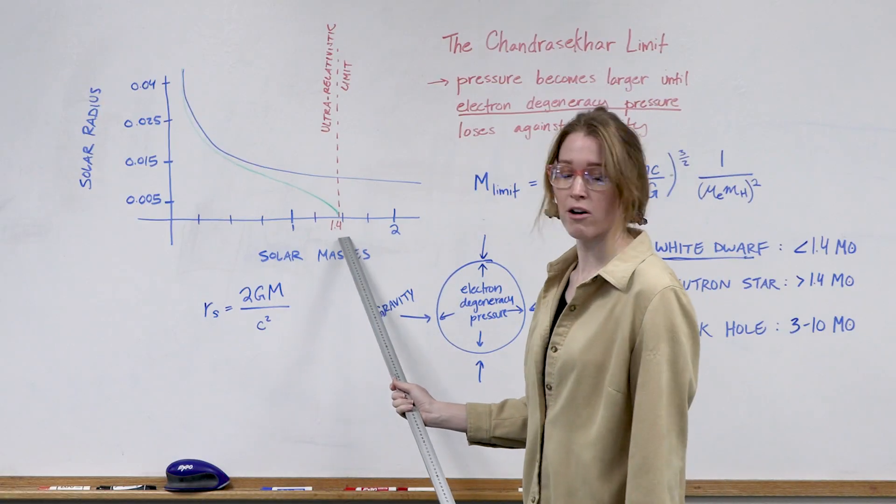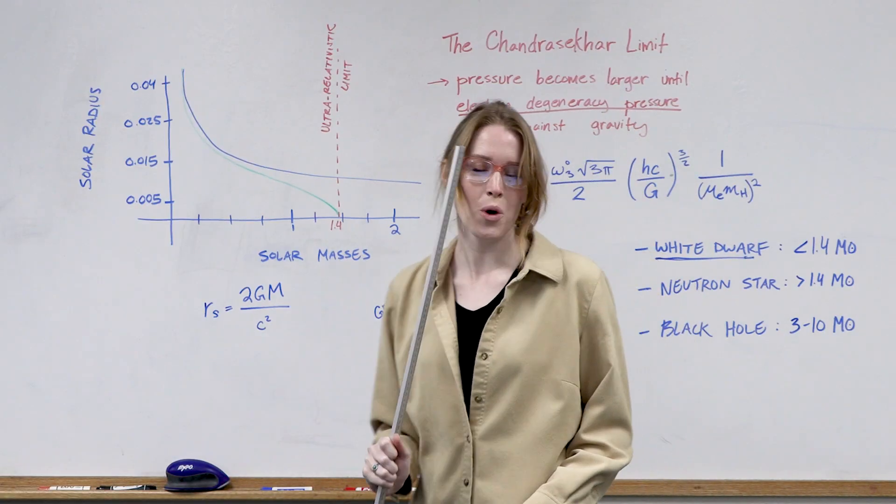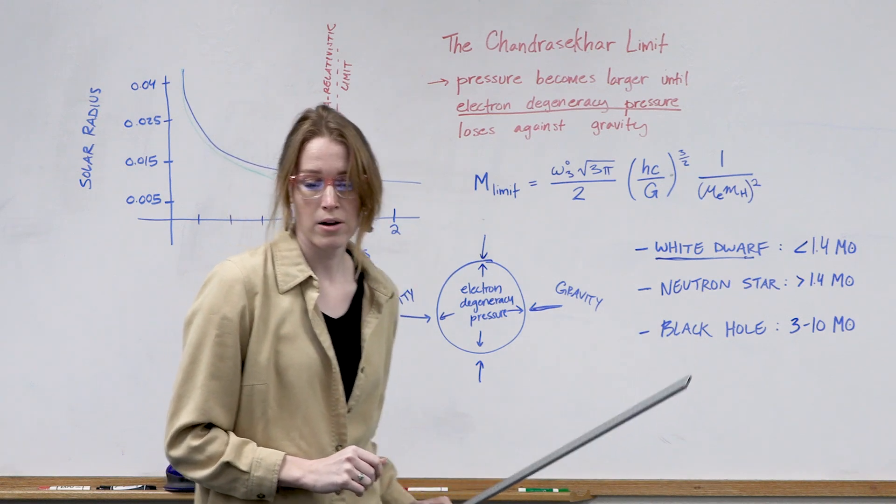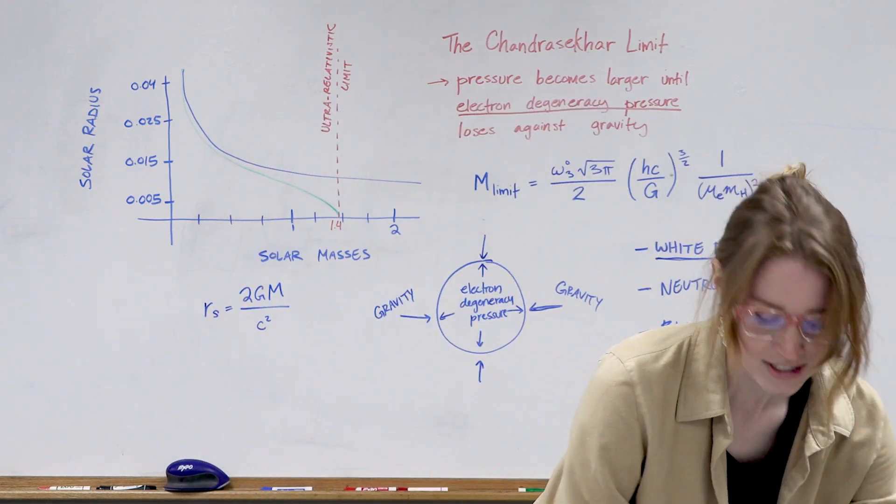But above this limit of 1.4 solar masses, what we end up with is a neutron star or a black hole. So allow me to demonstrate.